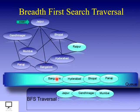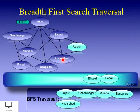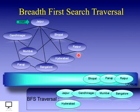Go back to step one, delete the front element — Bangalore — and display it. For Bangalore all adjacent vertices are already visited. Skip step two, go back to step one, delete Hyderabad and display it. For Hyderabad, Bangalore, Jaipur, and Bhopal are visited; only Raipur is remaining and not yet visited, so insert Raipur into the queue at the rear end and mark it as visited.